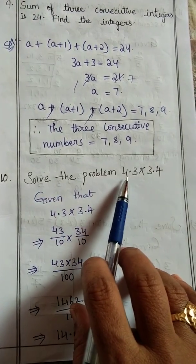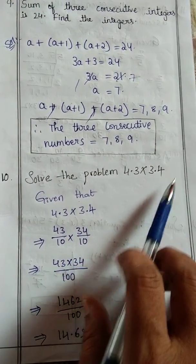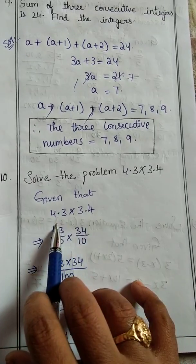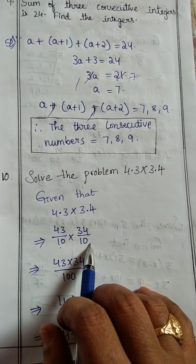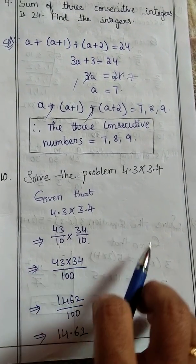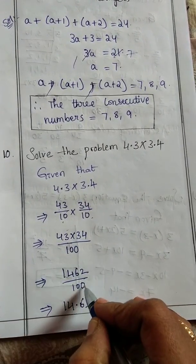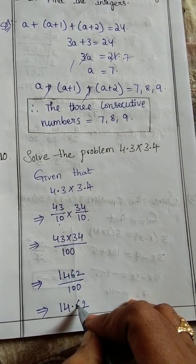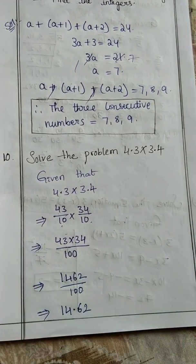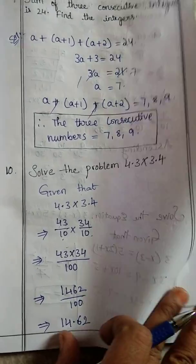Next question: solve the problem 4.3 into 3.4. Very simple. This decimal number is given. First we convert into rational numbers, then multiply these numbers. Denominator 100 is there, so after two digits we write the decimal point from the right side.